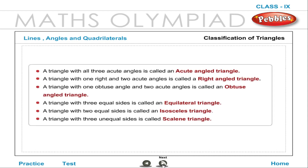Classification of triangles: A triangle with all three acute angles is called an acute angle triangle. A triangle with one right angle and two acute angles is called a right angle triangle. A triangle with one obtuse angle and two acute angles is called an obtuse angle triangle. A triangle with three equal sides is an equilateral triangle, with two equal sides is an isosceles triangle, and with three unequal sides is a scalene triangle.